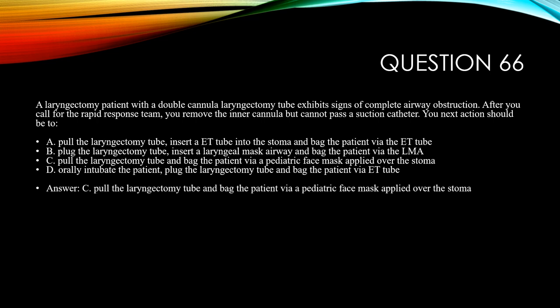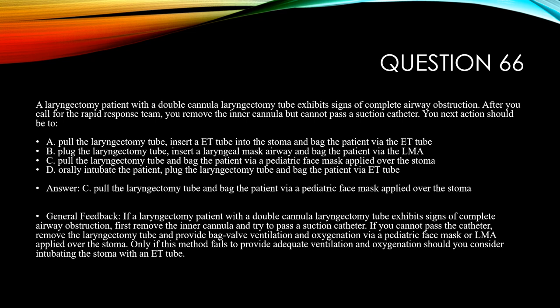The answer is C: pull the laryngectomy tube and bag the patient via pediatric face mask applied over the stoma. If you cannot pass a suction catheter after removing the inner cannula, remove the laryngectomy tube and provide bag-valve ventilation via pediatric face mask or LMA applied over the stoma. Only if this method fails to provide adequate ventilation and oxygenation should you consider intubating the stoma with an ET tube.